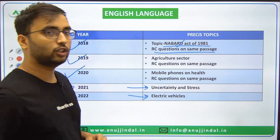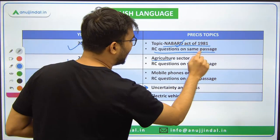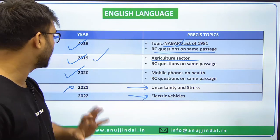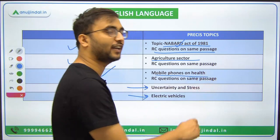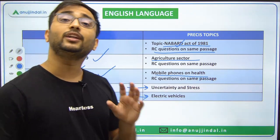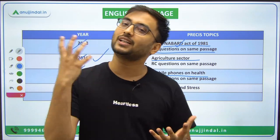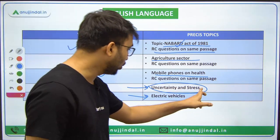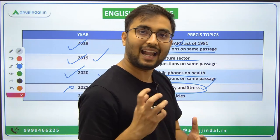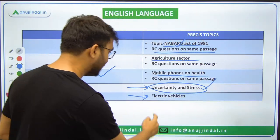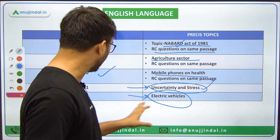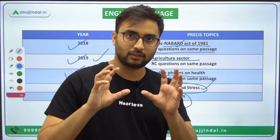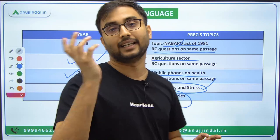Looking at Precis topics: in 2018 the topic was NABARD Act of 1981 and the agricultural sector scenario in the country. In 2019 a passage was given on a general topic. In 2020 the topic was mobile phones and their effects on health. In 2021 the topics became more dynamic and difficult — uncertainty and stress management, and electric vehicles. In 2022 again difficult topics were covered. Overall, the difficulty and depth of comprehension in precis passages has also increased.